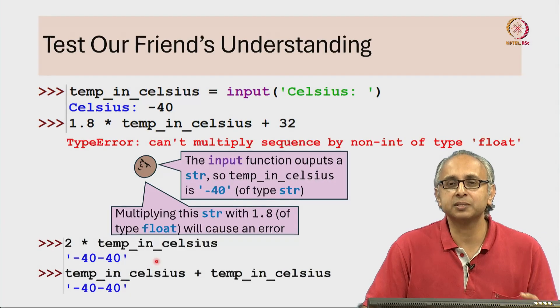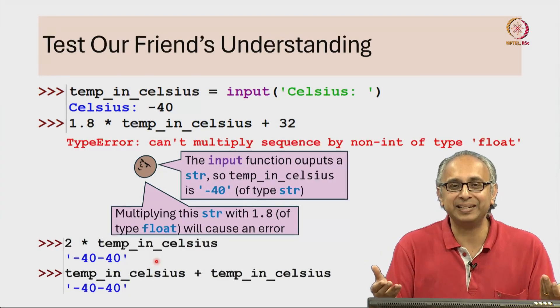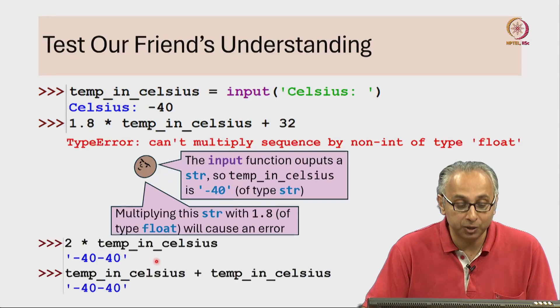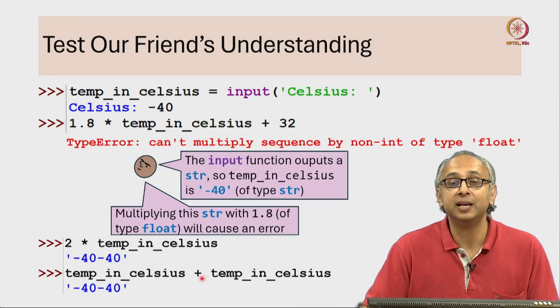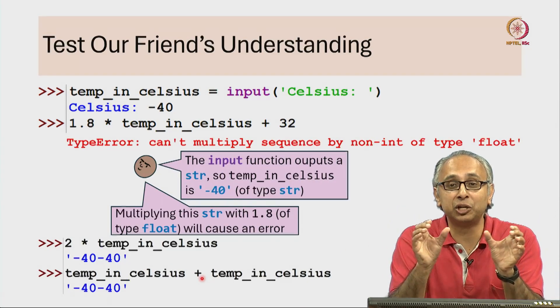One way to think about this: multiplying by 2 is like adding the value to itself. We know that addition of strings is concatenation - it's gluing them together.